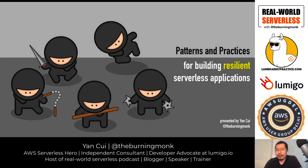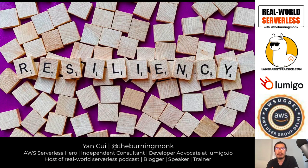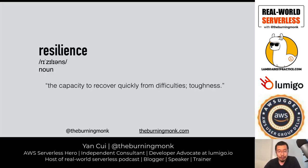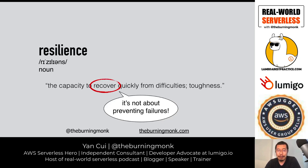Let's start this session on how to build patterns and practices for resilient service applications. A good place to start is defining what resiliency means. If you look at the Oxford Dictionary, the definition is the capacity to recover quickly from difficulties — toughness. Notice that this definition doesn't say it's about preventing failures, but rather that resilience is about being able to recover from them.